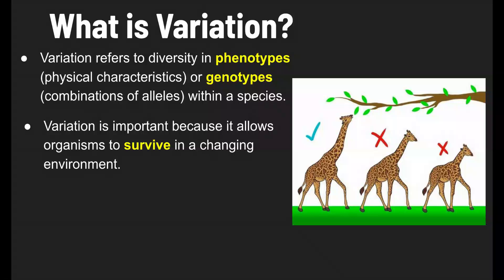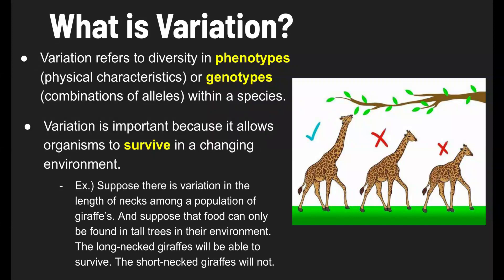Variation is important because it allows organisms to survive in a changing environment. To illustrate this, I've put an image of giraffes on the slide. Suppose there is variation in the length of necks among a population of giraffes, and suppose that food can only be found in tall trees in their environment. The long-necked giraffes will be able to survive and reach the food, but the short-necked giraffes will not survive — their necks are too short, so they will starve and die.